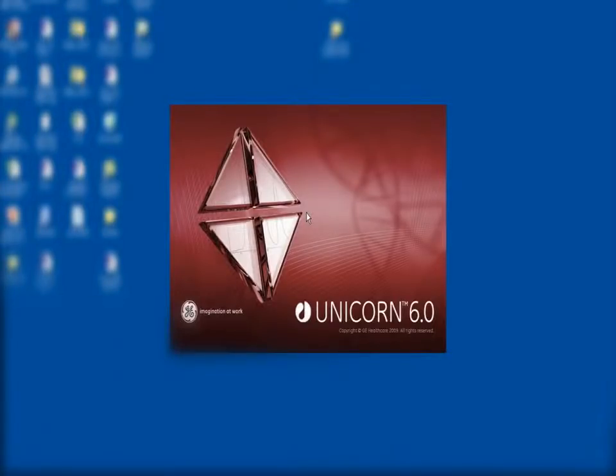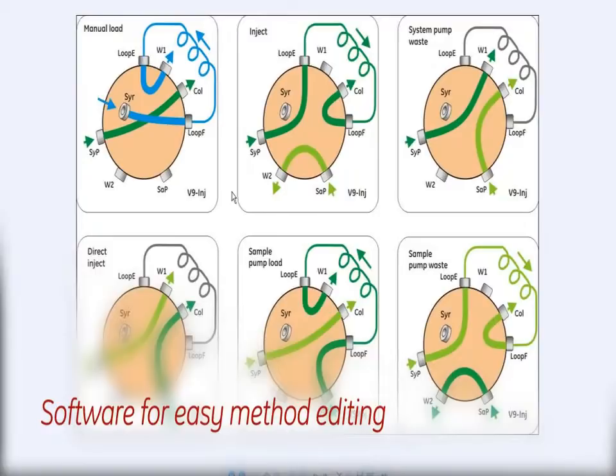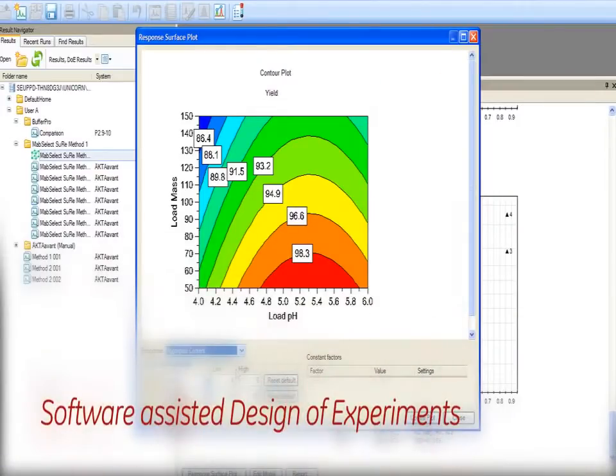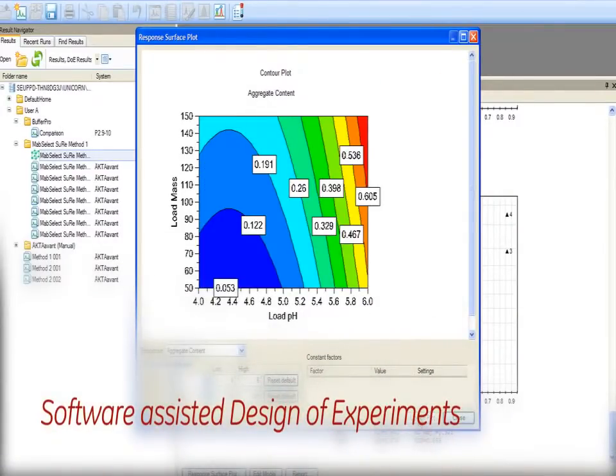Unicorn 6 controlling software for easy method editing. Software and hardware assisted design of experiment.